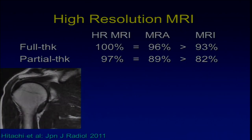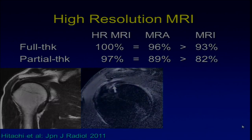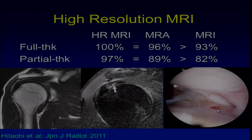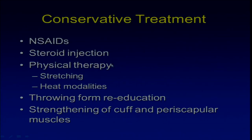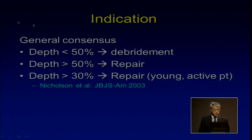For example, regular MRI may not show any tear, but using high-resolution MRI you can clearly see the PASTA lesion, and diagnostic arthroscopy confirms the lesion. Treatment: conservative treatment should come first — steroid injection, physical therapy, stretching, and heat modalities. For throwers, throwing form re-education is necessary, along with strengthening of cuff and periscapular muscles. The surgical indication consensus is: when the depth of the PASTA is less than 50%, do debridement; if more than 50%, repair it. For young active patients, repair when the depth exceeds 30%.